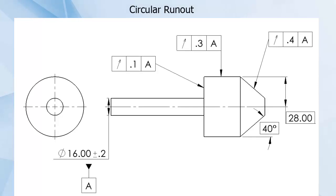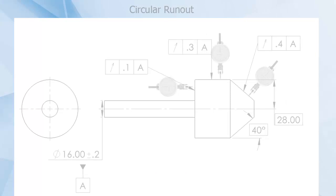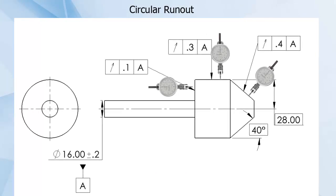Runout is also unique in that it can be used against any surface of the part as it rotates. This part can be held for rotation around its axis, and then surfaces that are parallel, angled, and perpendicular to the axis can have runout applied. In each case, the gauge pin would be held perpendicular to the surface feature, and a two-dimensional TZ would be created.